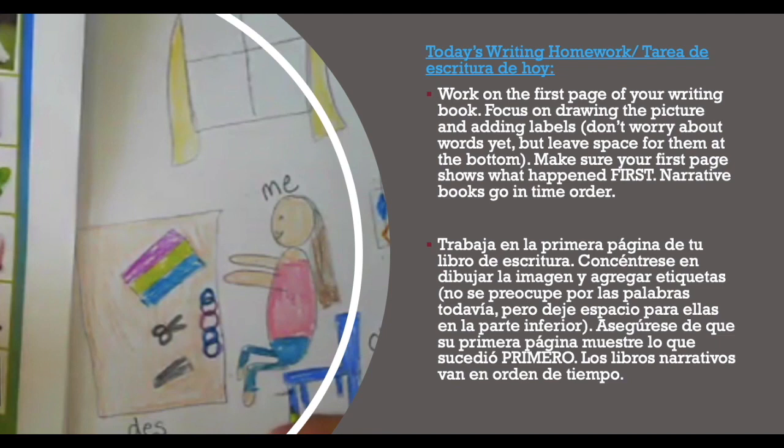Trabaja en la primera página de tu libro de escritura. Concéntrase en dibujar la imagen y agregar etiquetas. No se preocupe por las palabras todavía, pero deje espacio para ellas en la parte inferior. Asegúrese de que su primera página muestre lo que sucedió primero. Los libros narrativos van en orden de tiempo.